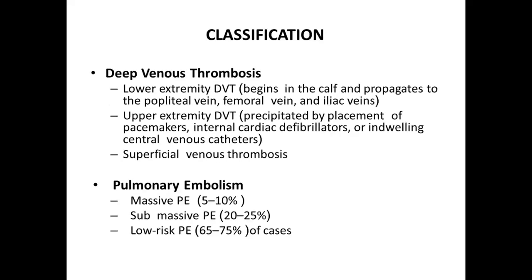Moving on to classification: deep vein thrombosis is classified into three categories — lower extremity DVT, upper extremity DVT, and superficial venous thrombosis. Lower extremity DVT is the most common, about 10% more common than upper extremity DVT, and usually begins in the calf, propagating to the popliteal, femoral, and iliac veins. Upper extremity DVT is rare but is precipitated by pacemaker replacement, internal cardiac defibrillator, or indwelling central venous catheters. Pulmonary embolism is classified as massive, submassive, and low-risk.